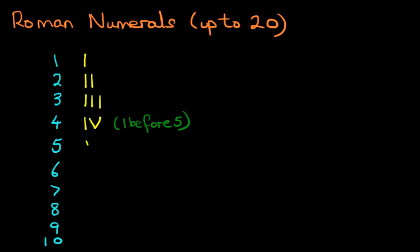5, well that's quite simple. It is simply V. And now it follows the same pattern as above. But now we just add the 1, 2, 3 after the 5. So 6 is V, I. 7 is V, and then I, I. 8 is V, I, I, I.